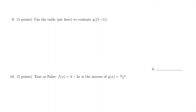For number 9, there is no picture, so we're going to omit this question as well. If you were given a picture, you'd look at f evaluated at negative 1 first, find the value, then plug that into function g. Since there's no picture, I'm omitting this one.